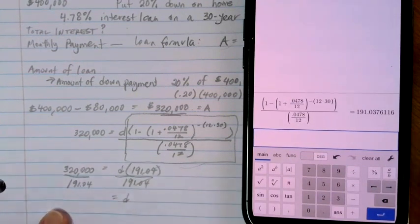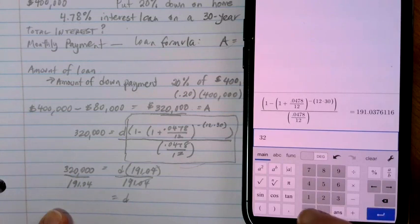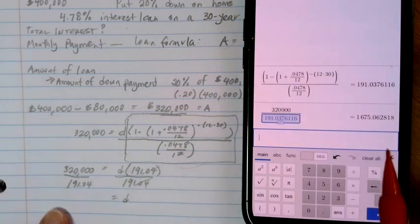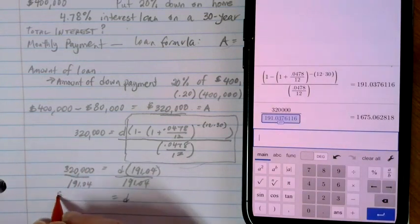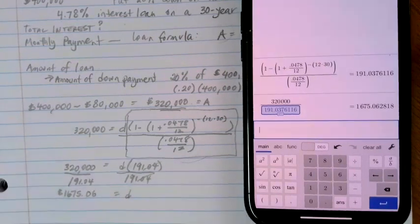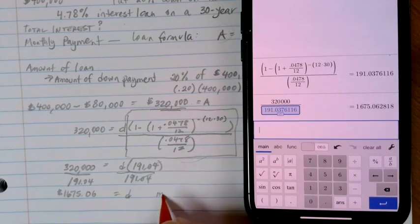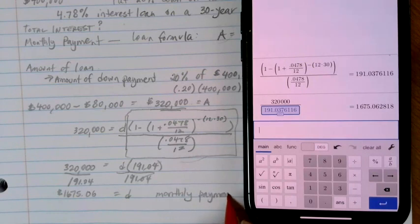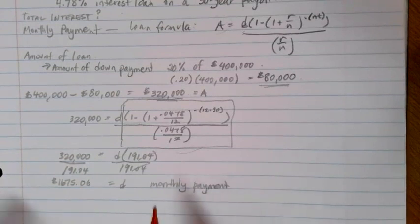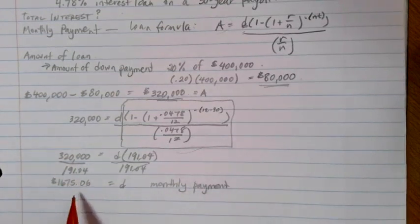And we end up with D is equal to, take our $320,000 here and divide it by that last answer. And we get a monthly payment of $1,675.06 every month.